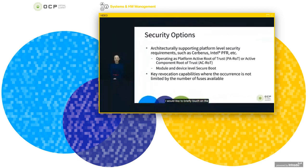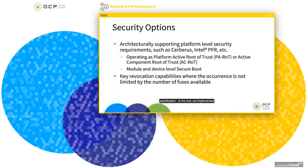I'd like to briefly touch on the security aspects of this design. I'll focus on a few elements of platform root of trust and refer to the server specification for more details, which can be found on the OCP website. The security architecture of this module is aimed to support the Microsoft server's high-security specification. We implement the hardware of this module to operate as the platform root of trust or an active component root of trust, meaning it is the server platform design decision to either make the module the platform root of trust or only the root of trust for the module, responding to the challenges of the platform root of trust like Intel PFR or any other OEM custom security engine.